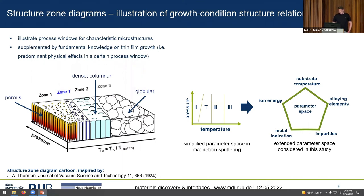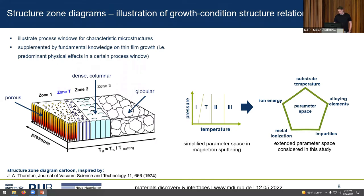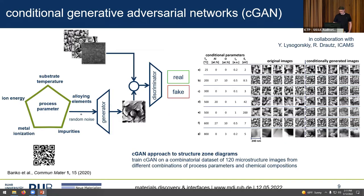This was done for refractory metals. However, modern plasma reactors have many more parameters that can be individually varied, so the parameter space is much larger. The idea is: can we use an AI model to predict such microstructure structure zone diagrams?